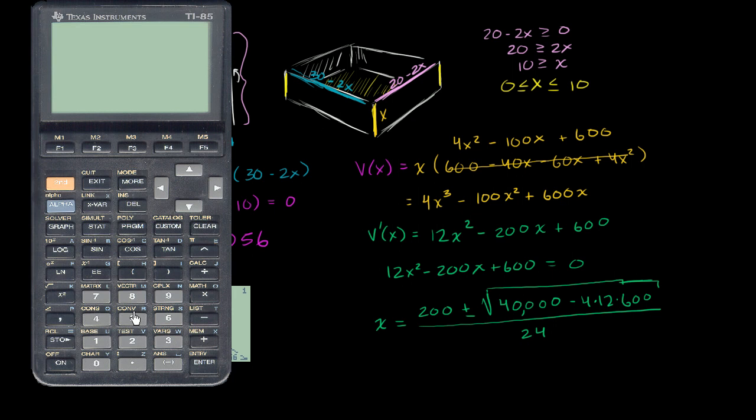So first I'll try when I add the radical. So I'm going to get 200 plus the square root of 40,000 - I could have just written that as 200 squared, but that's fine - 40,000 minus 4 times 12 times 600. And I get 305, which I then need to divide by 24. And I get 12.74.